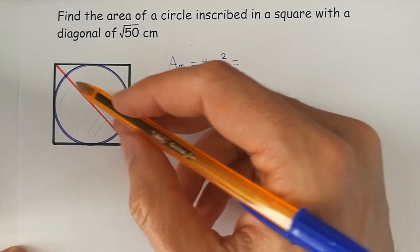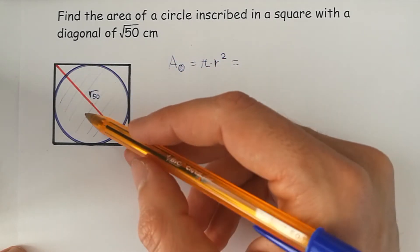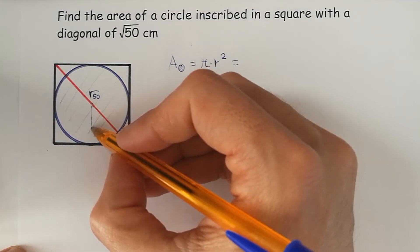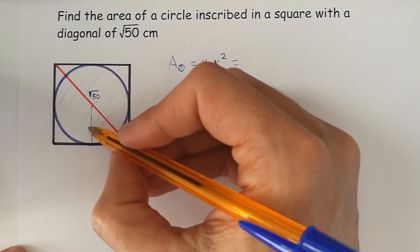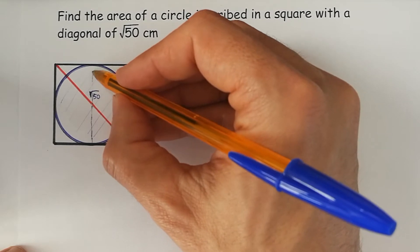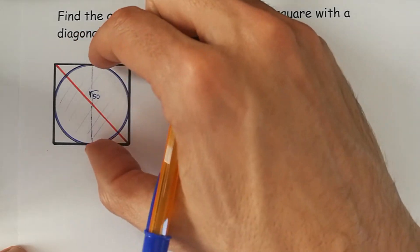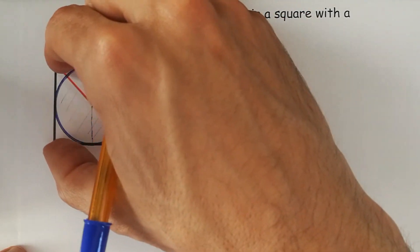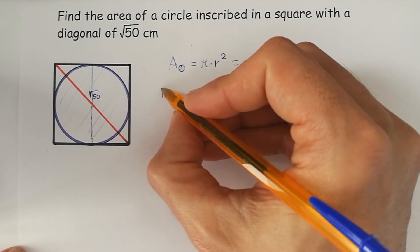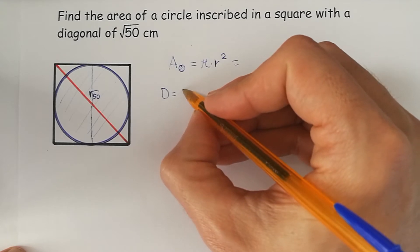Here with this diagonal it has no relationship, but if we draw the radius here in vertical, we notice that the diameter of the circle is the same length as the side of the square. This is very important for the exercise. The diameter is the same as the side of the square.